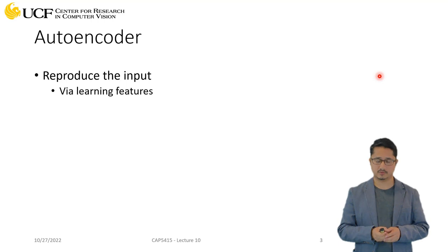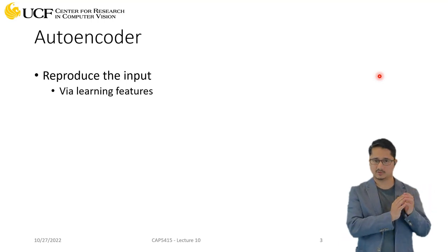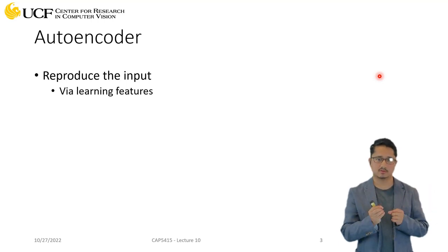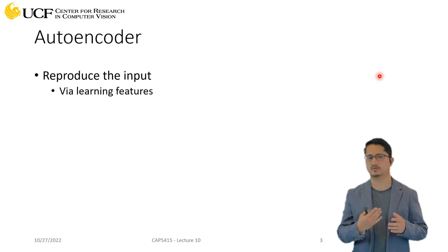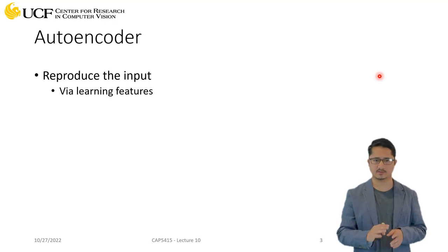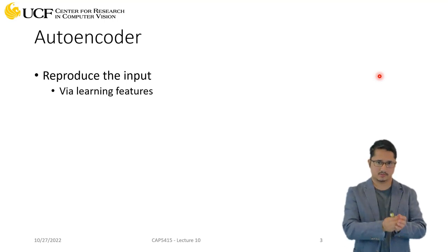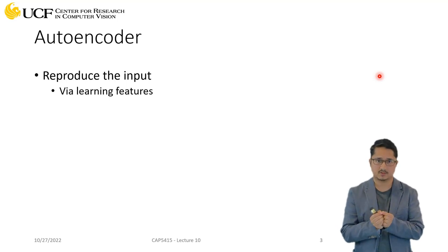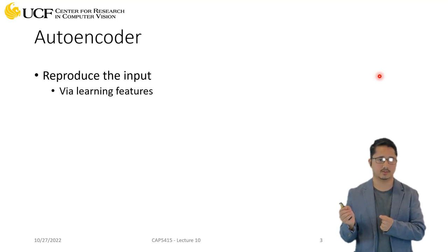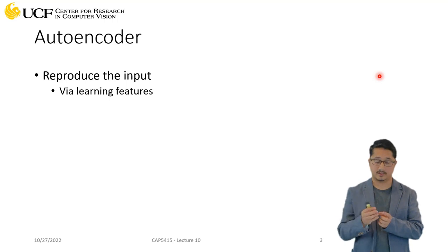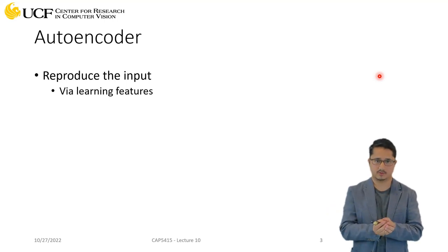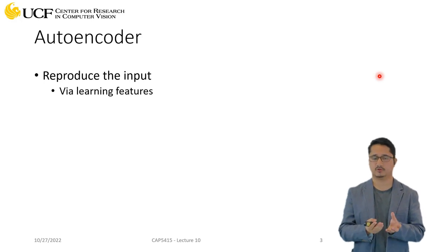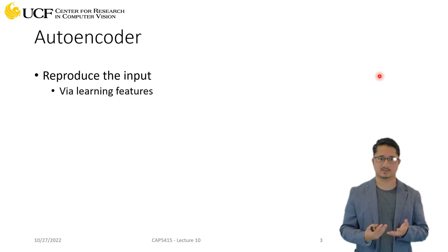The way you do this is you have your input sample and you try to learn some meaningful features. That could be using fully connected layers, CNN convolutional layers, or any other way. You learn those features, and then you use those features to again reconstruct that input data. If you're able to do that, it means the features are good, because they're capturing the information about your input sample, and that's why they're able to reconstruct it.